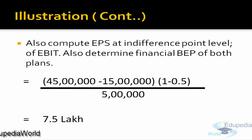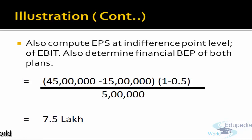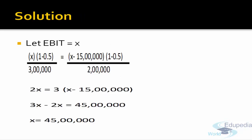This x of 45 lakh is that level of EBIT at which, whether you go for equity plan or the company goes for debt-equity plan, the earning per share of the company will remain the same. So to compute EPS at this level: 45 lakh less 15 lakh interest portion, less tax, divided by the number of shares 2 lakh — and likewise through the equity plan — you get the same EPS, so the company could opt either of the proposals.